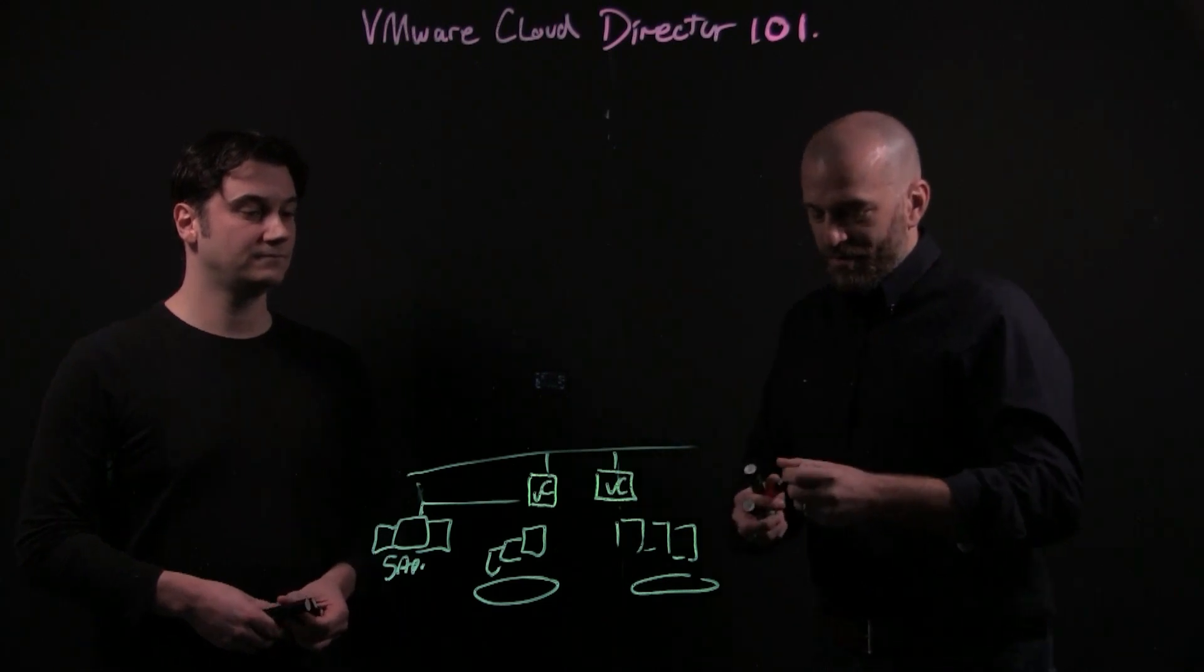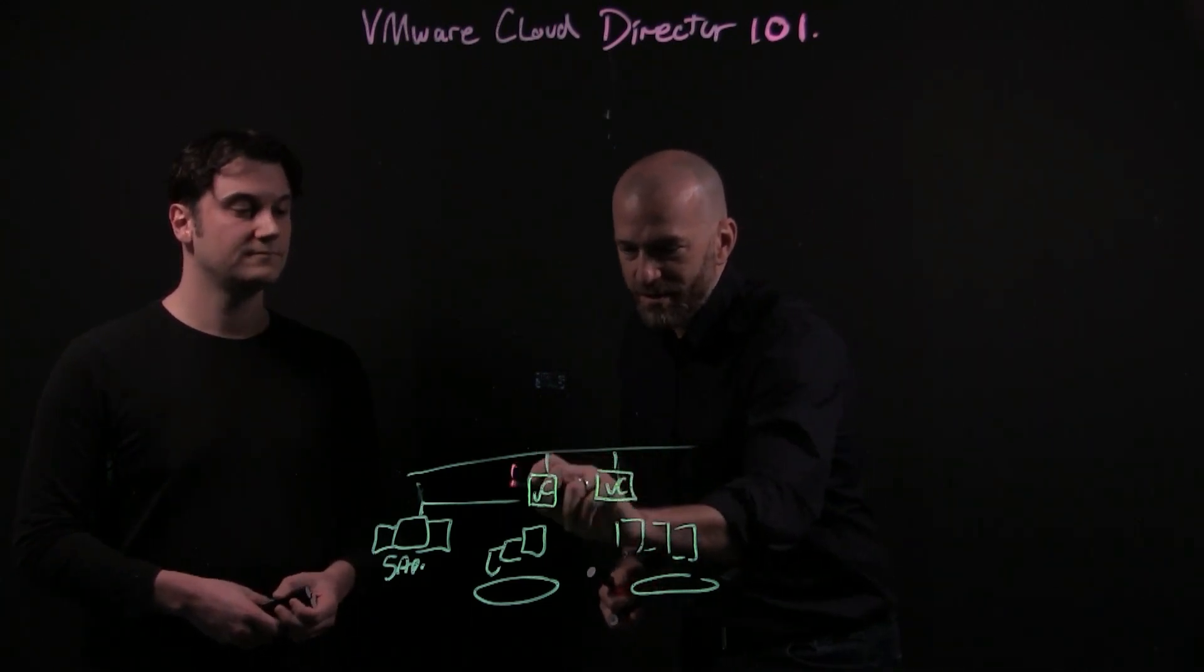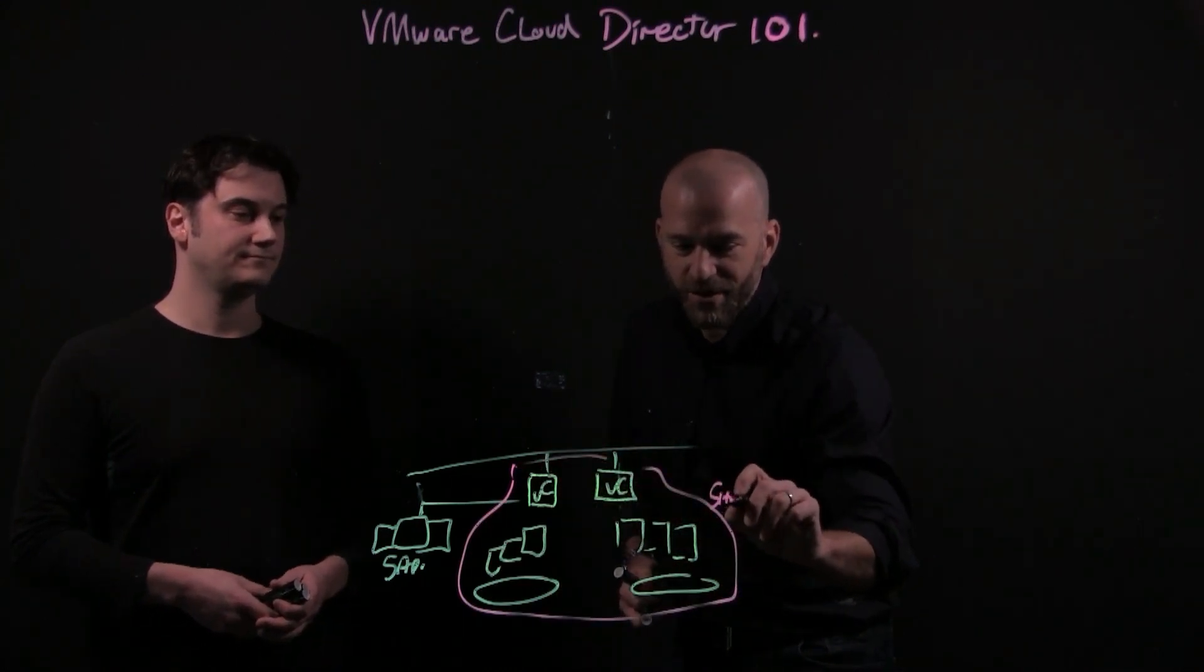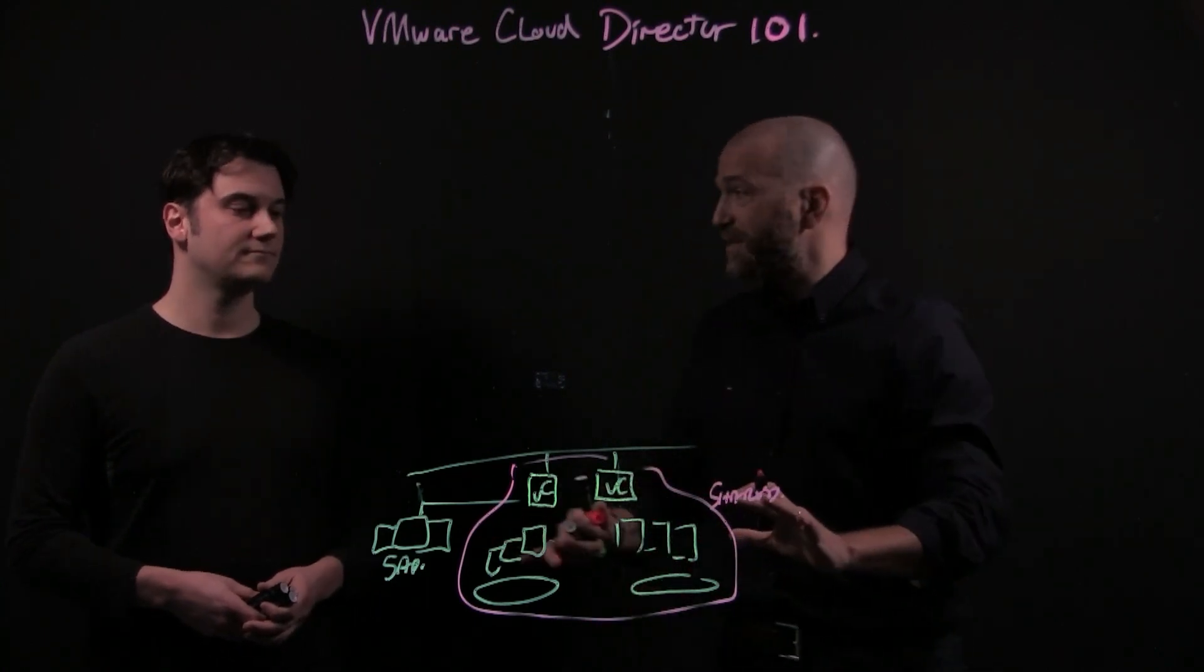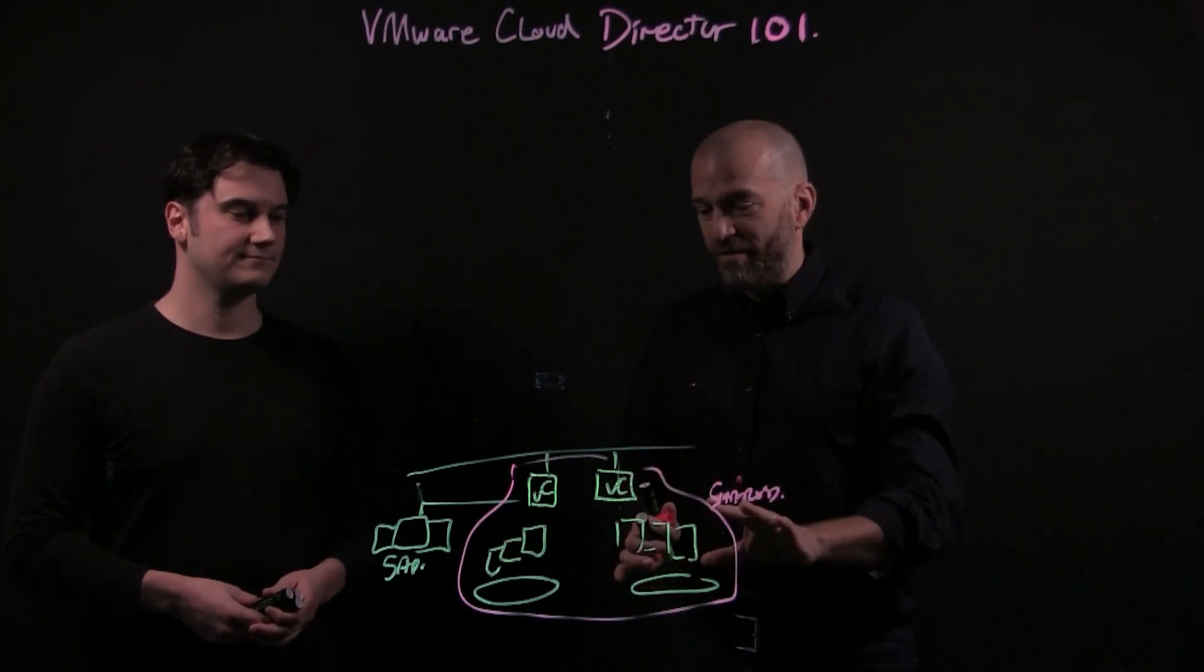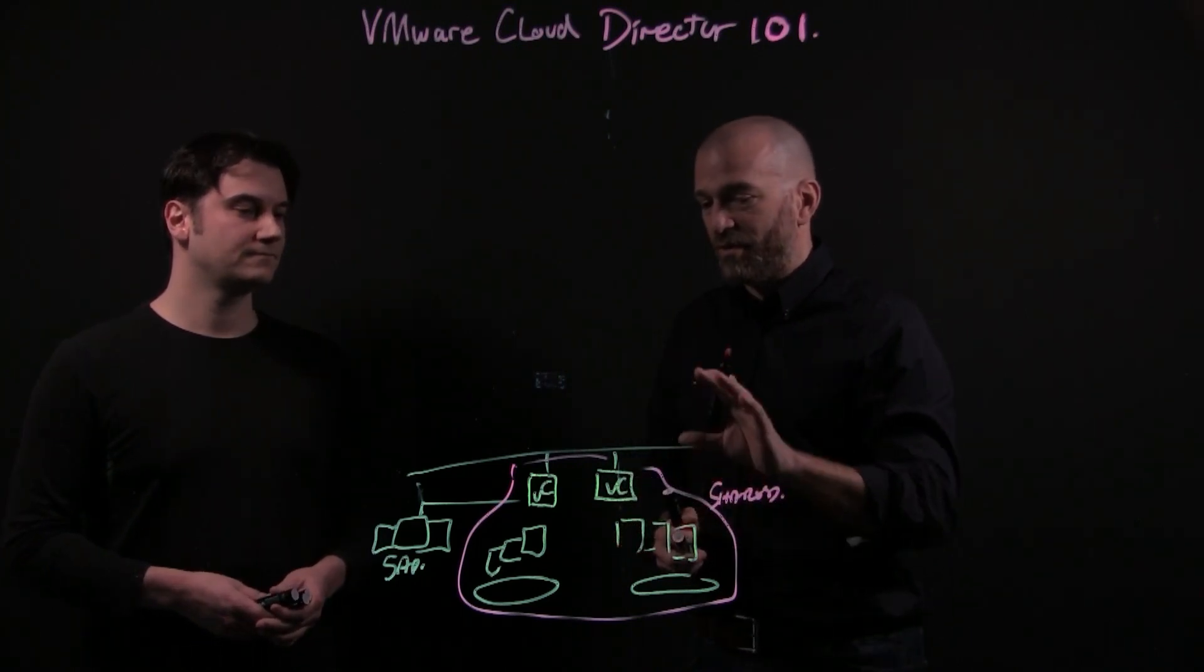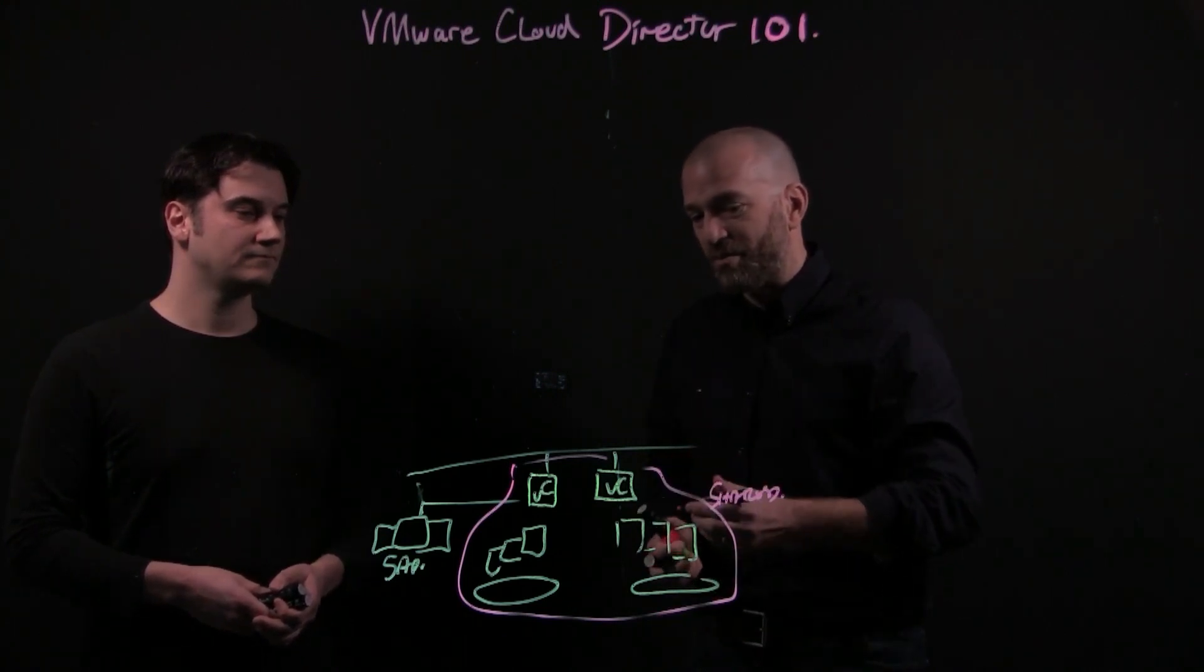So today we run managed services in these vCenters here, in vSphere. They are a shared infrastructure but we don't allow tenants any access to them obviously because they would be able to see other tenants' workloads. It's all heavily controlled, that layer of access. How does vCloud Director help us with that sort of model?